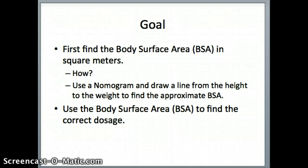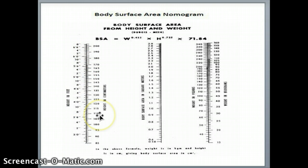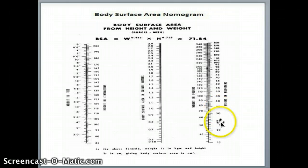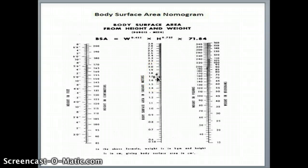Here's what a nomogram looks like. We have height in feet on one side, height in centimeters on the other, depending on which information you have. Weight in pounds on one side, weight in kilograms on the other. We're going to draw a line from a person's height to a person's weight, and where it crosses will be the approximate body surface area, which will enable us to determine the dosage of medication.